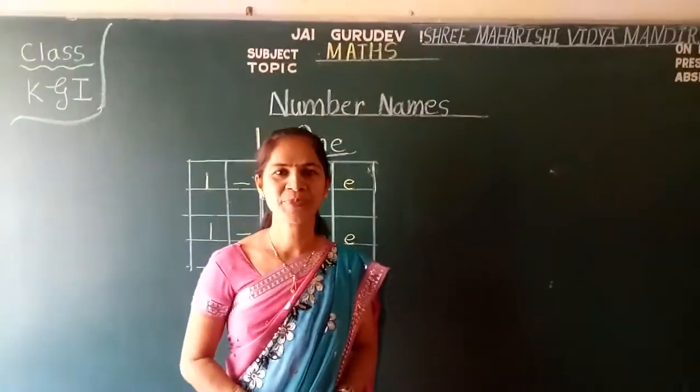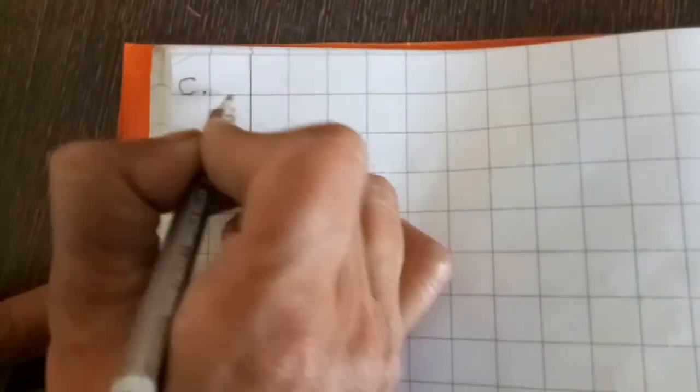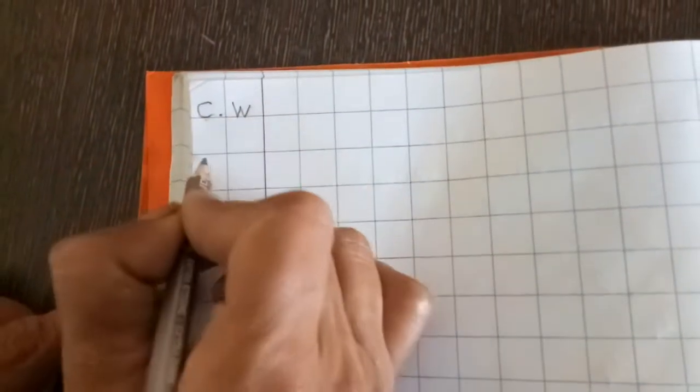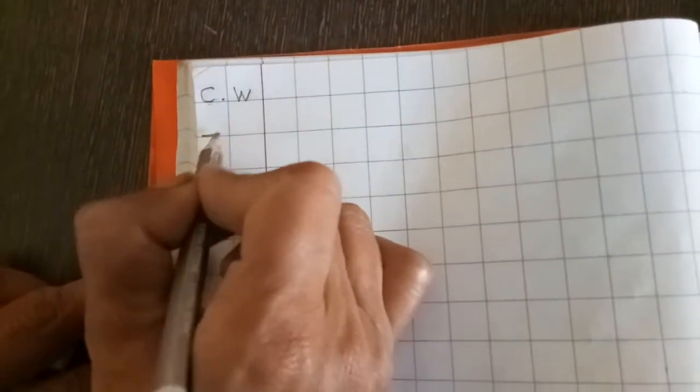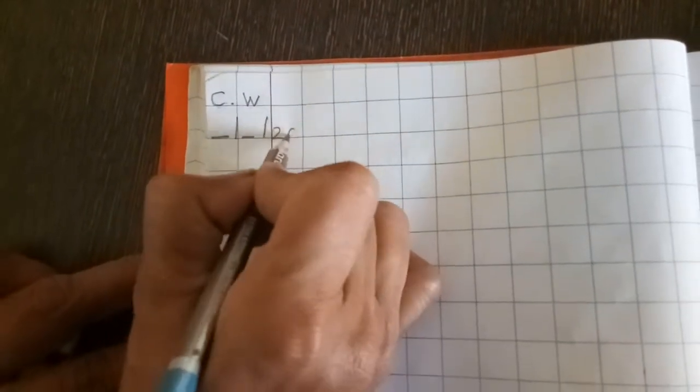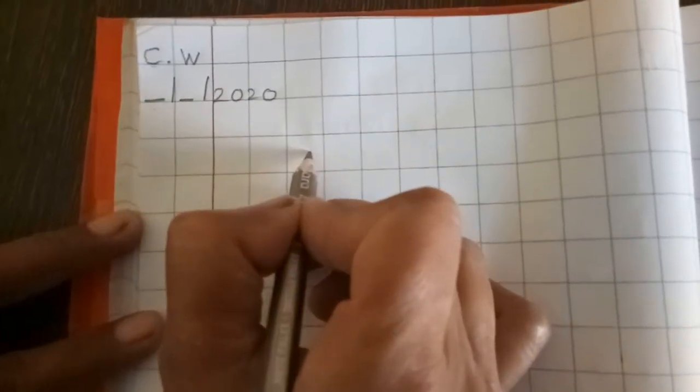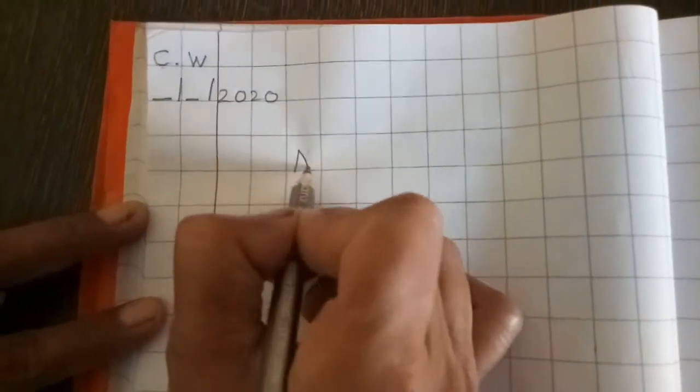Now, open your notebook. You have to mention C.W. - class work. Number. And here, heading: Number Names.